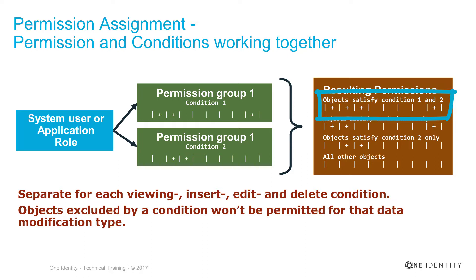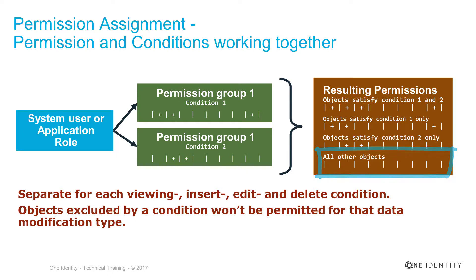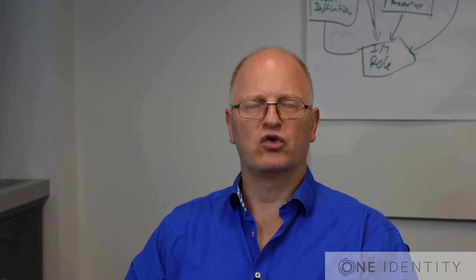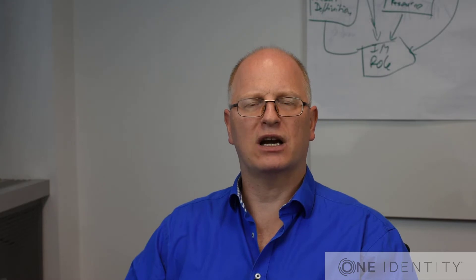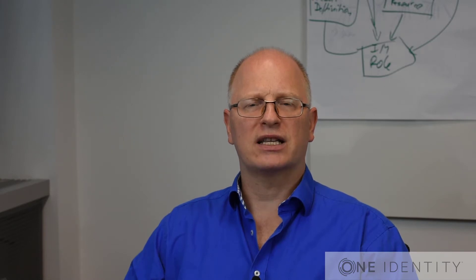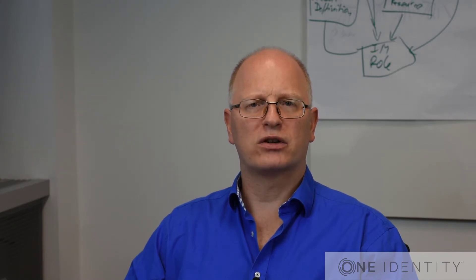Of course there's not only one condition defined. We can define four of them per base object: one to see the data (viewing condition), one to edit the data, one to delete, and one to insert data. The last question is what happens with objects not included in these conditions. As long as no permission group is assigned without any condition, only the objects included in the conditions are permitted as set on the permission group. Once a permission group is assigned without conditions, all other objects — those not part of the defined conditions — get permitted in the way defined for that unconditioned permission group.